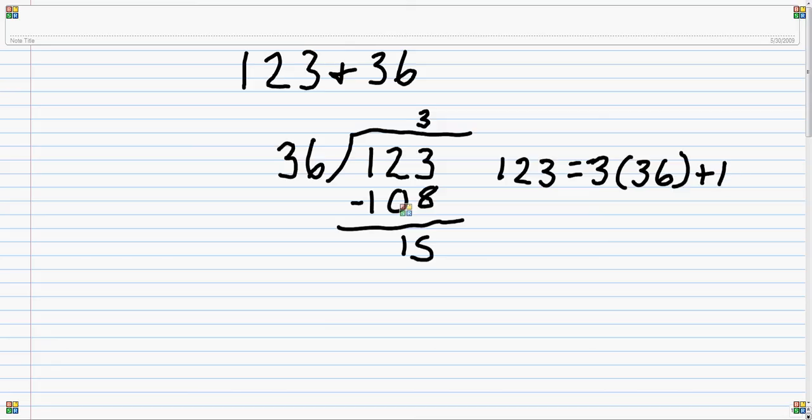Because the remainder is 15, and 3 times 36 was 108, plus 15 was 123. So now since we didn't get 0, you want to keep doing this until you get 0. And the divisor that gives you 0 is your greatest common factor.